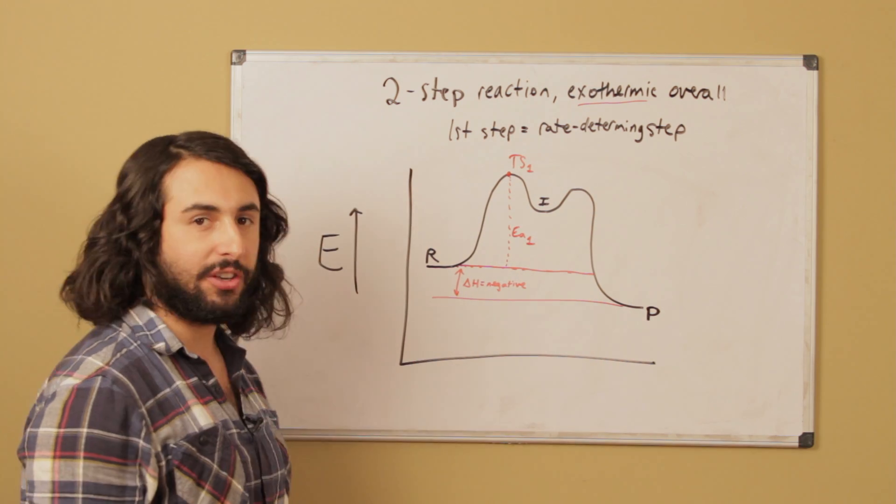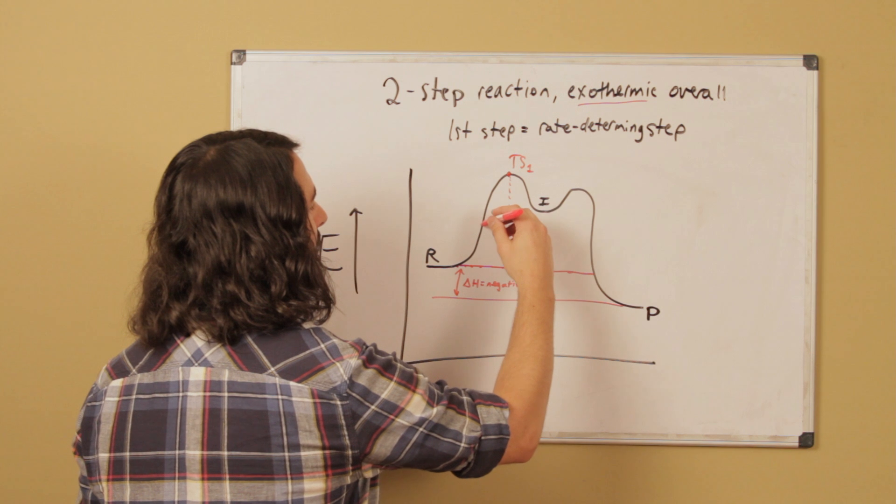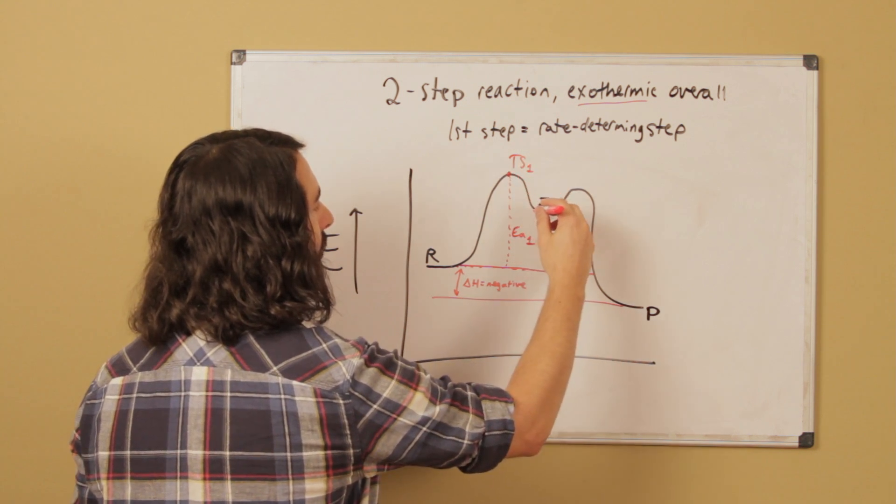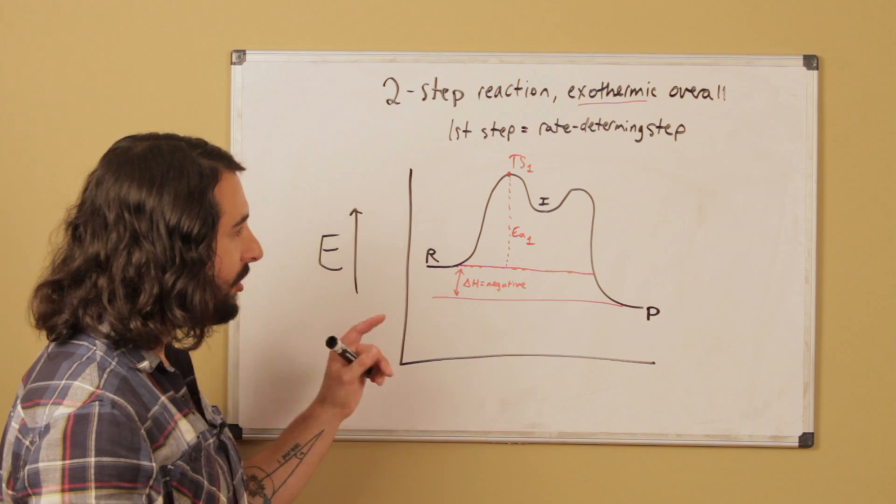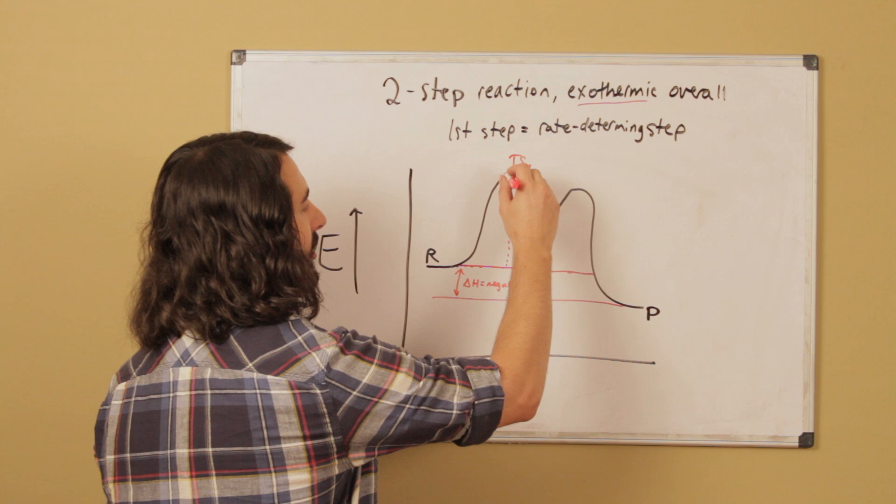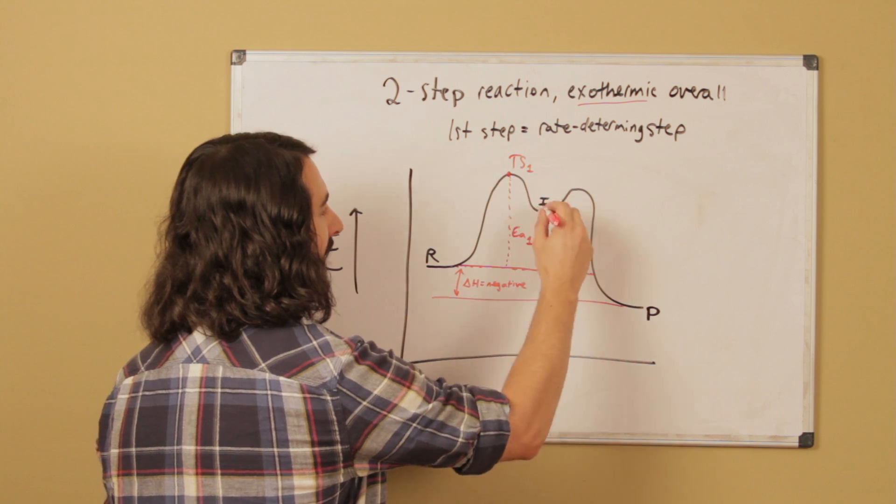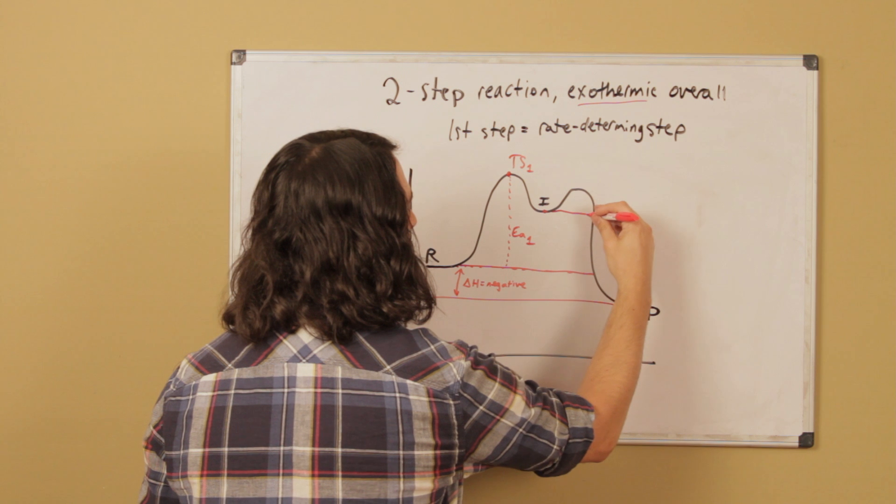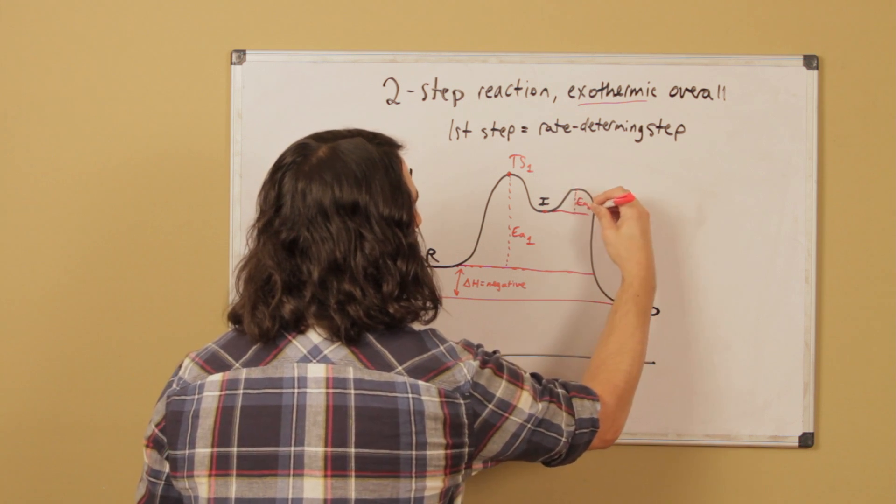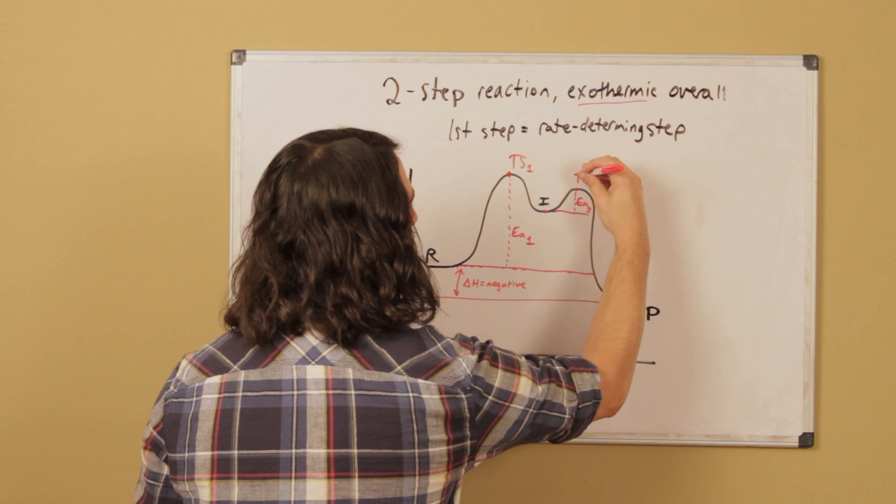For any reaction, we're going to have an activation barrier that has to be overcome to reach the transition state, after which point it will continue to completion. So there's transition state 1—we start with the reactants, then transition state, activation energy, and we get to this intermediate. Then right here, this is activation energy 2 and transition state 2.